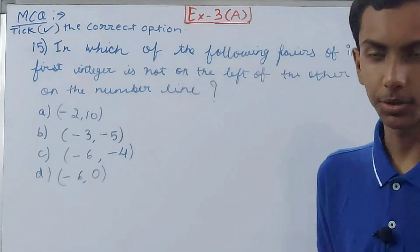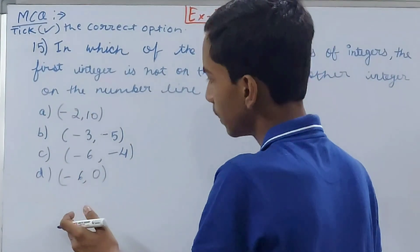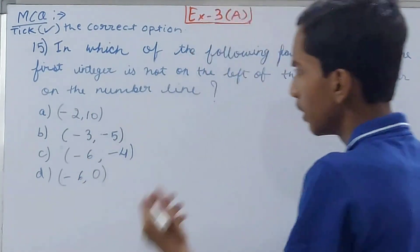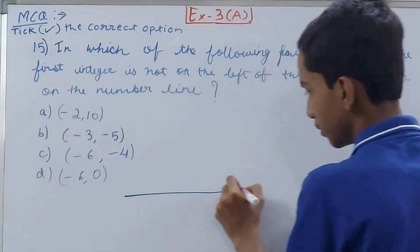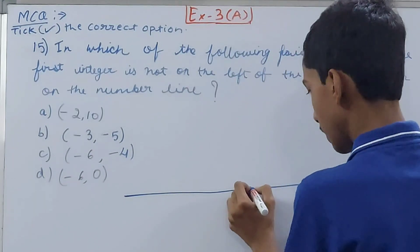So we can declare that as the correct option, right? So what I'll do, I'll first make the number line. Let's see the numbers that are there. We have -6, right? So I'll make 10 on both sides. I'll make a very big one here, somewhere like this, right? And this will be my zero.